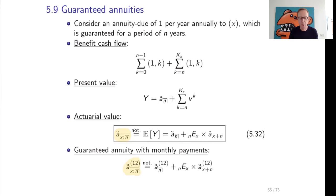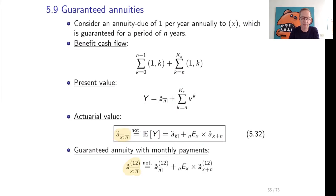What is the actuarial value of this cash flow? The actuarial value is the expectation of Y: a double-dot n plus the value of a deferred annuity, so plus n-E-x multiplied by a double-dot x+n. This actuarial value will be denoted by a double-dot with x and n overlined. So there are two entities involved here: x and n. x lives for another T_x years, a random number of years, and the guarantee exists for another n years.